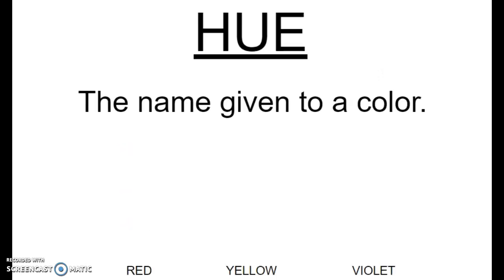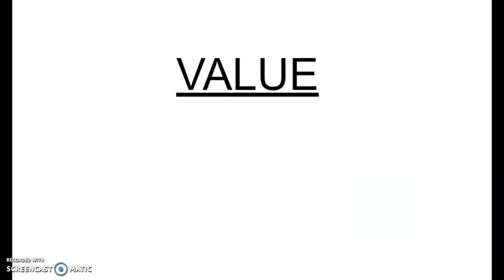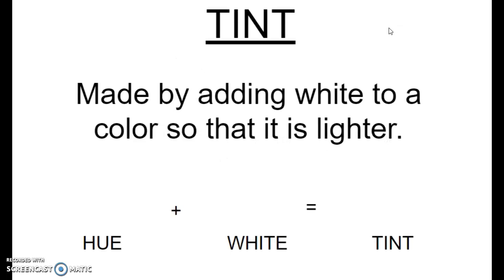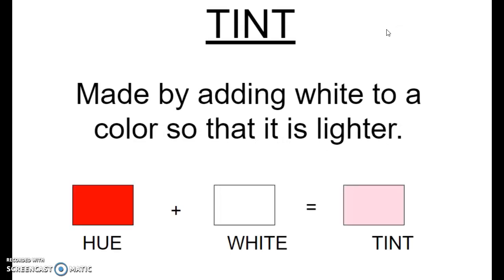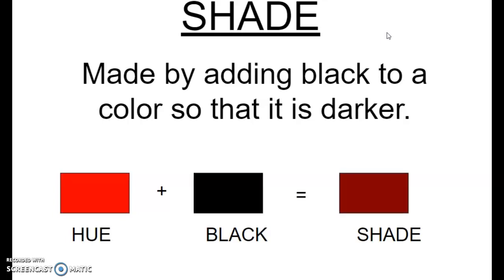Hue is the name given to a color, such as red, yellow, and violet. Value is the lightness or darkness of a color. For example, the hue is red — add white and you get the tint, which is pink. For shade, you have your hue which is red, and you add black and you get burgundy or maroon. That applies to any hue, making that color darker.